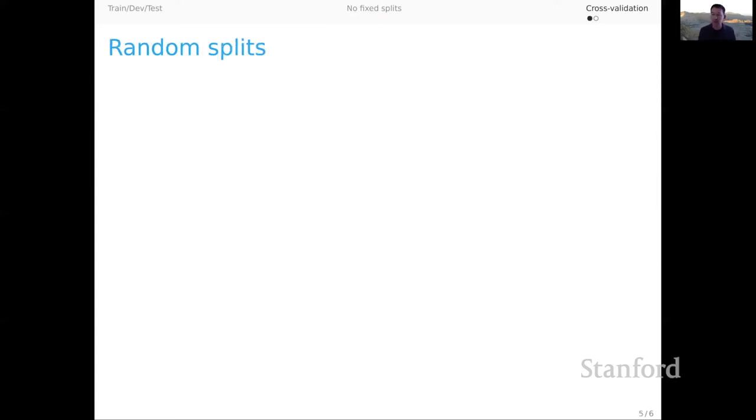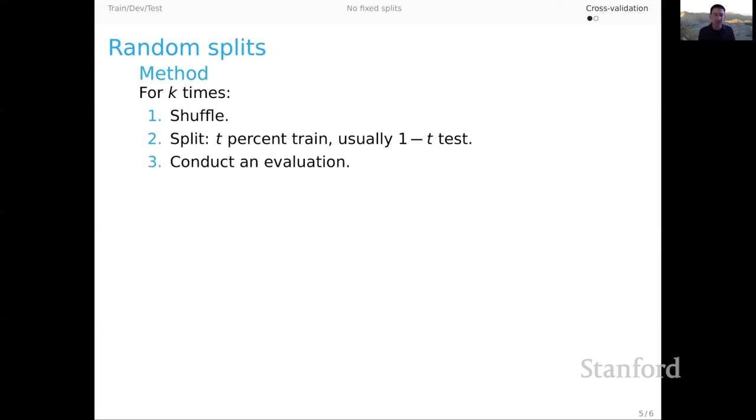Let's begin with what I call random splits here. So under the random splits regime, you take your data set, and let's say k times, you shuffle it, and you split it, and you have t percent for train and then probably the rest left out for test. And on each one of those splits, you conduct some kind of evaluation, get back your metrics, and then at the end of all these k evaluations, you probably average those metrics in some way to give a single summary number for system performance.